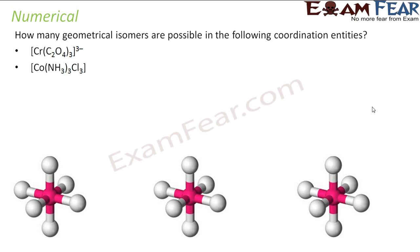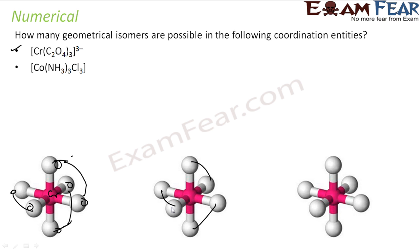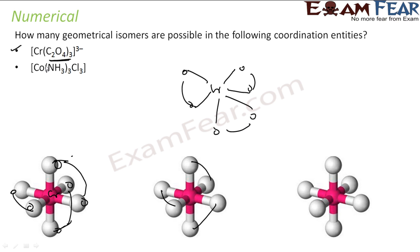The question asks: how many geometrical isomers are possible for the following coordination complexes? The first one is Cr(C2O4)3 3−. That means there are three C2O4 ligands. Each C2O4 is oxalate — a bidentate ligand forming a bond like this. Coordination number is 6 (3 ligands each didentate), which gives an octahedral geometry.